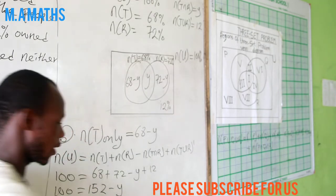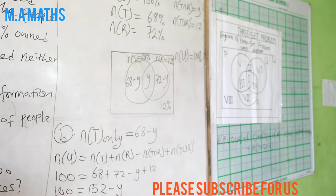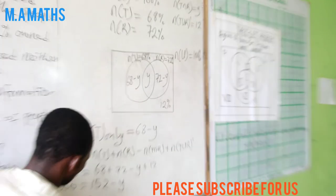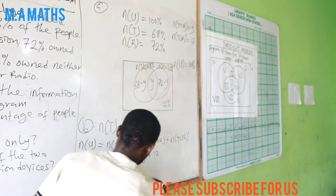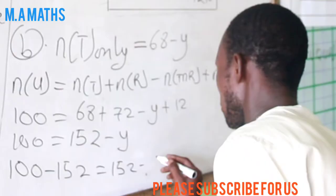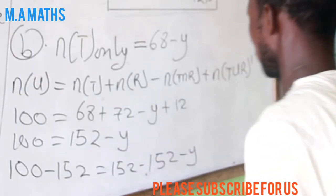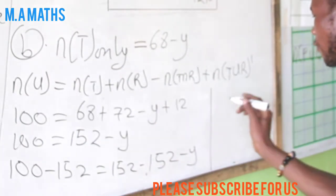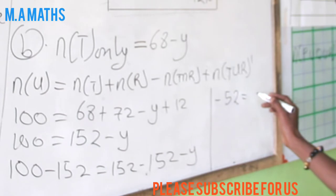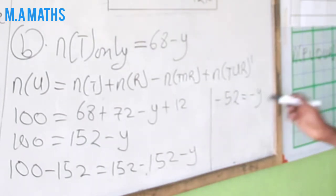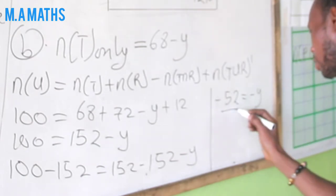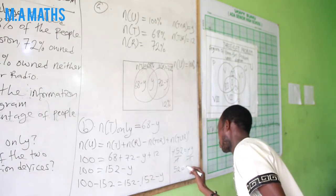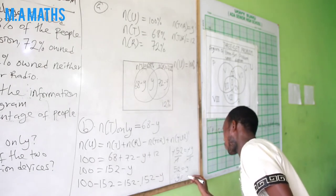So we get 152 minus y. In this case we subtract 152 from both sides. So we have 100 minus 152 equals negative y. This will give us negative 52 equal to negative y. Meanwhile we are looking for positive y, so we divide both sides by negative 1. This goes with this. So I will have 52 equal to y. Therefore our value for y is 52.